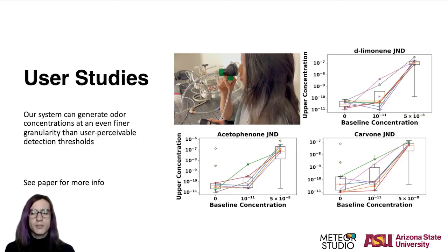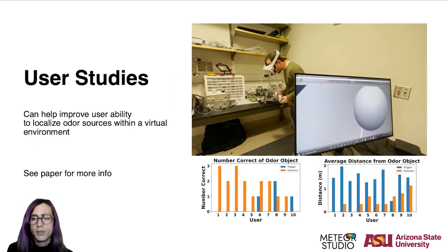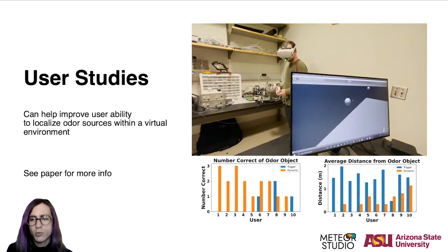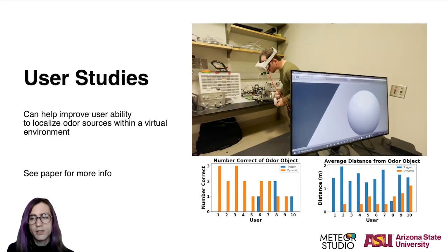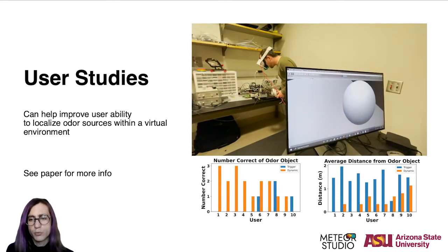In our user study, we used the Smell Engine to identify user-perceivable detection thresholds for changes in olfactory stimulus magnitude. Not only could the Smell Engine help identify a subject's odor acuity levels, but it could generate odor concentrations at an even finer granularity than user-perceivable detection thresholds. For the final part of the user studies, we prompted users to identify odor sources in a virtual environment using two different odor delivery methods: a distance-based approach and a collider-based approach. For the distance approach, concentration is a function of distance, gradually getting more potent with user proximity. By contrast, with the collider-based approach, the concentration is fixed and activated when the user is within a collider. The results suggest that our system can improve user accuracy in localizing artificially generated odor sources within a virtual environment, as compared to existing trigger-based solutions.